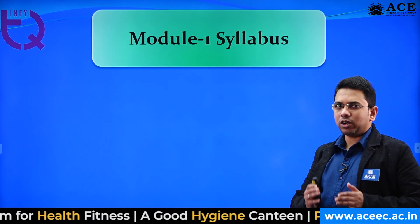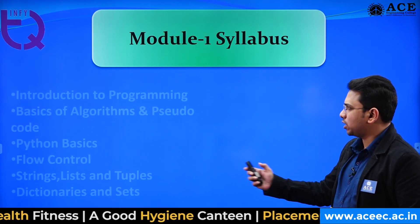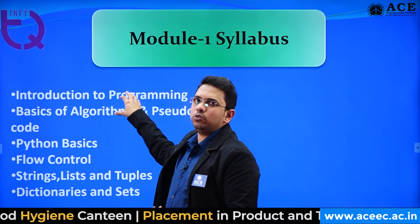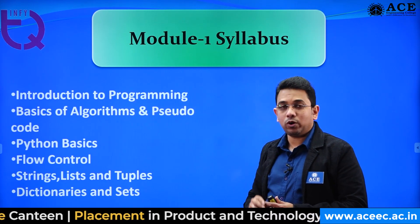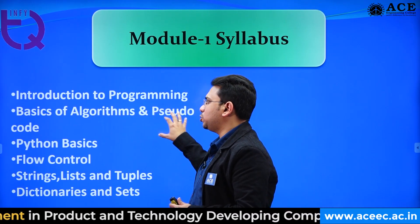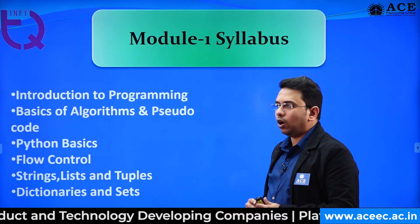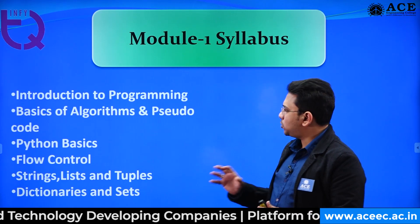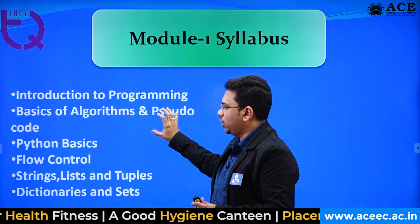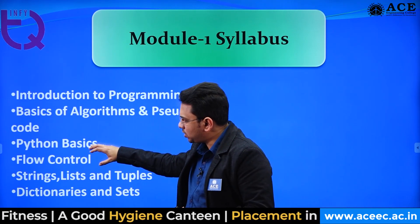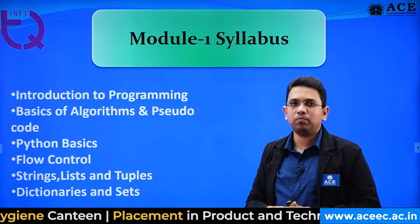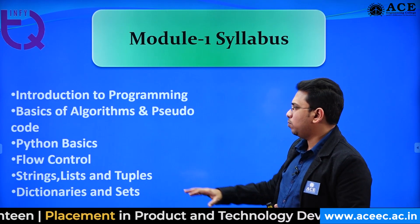Module 1 is divided into Part 1 and Part 2. The syllabus comprises introduction to programming — what programming is, why you need it — followed by basics of algorithm and pseudocode: how to write an algorithm and a pseudocode, presented through beautiful animated content. Then Python basics: variables, data types, different operators in Python, implicit and explicit type conversion, followed by flow control.